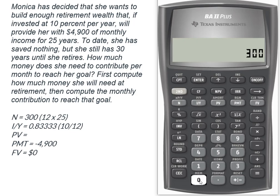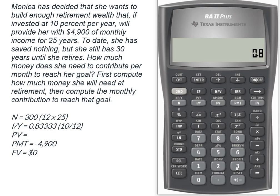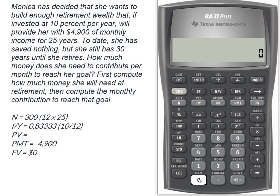We know that we're going to get 300 payments. We know that our interest is going to be that 0.8333 every month. We know that her payment that she wants to draw out is $4,900, which is a negative. And we know that she's going to spend all of her money so her future value will be zero. Now we want to compute her present value. So when she retires, she needs $539,233.10 sitting in her retirement account.